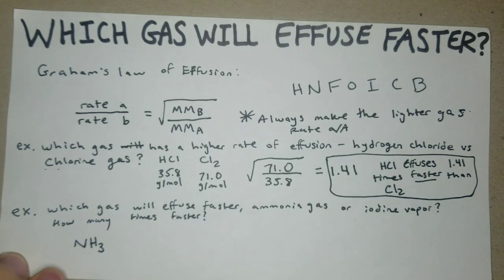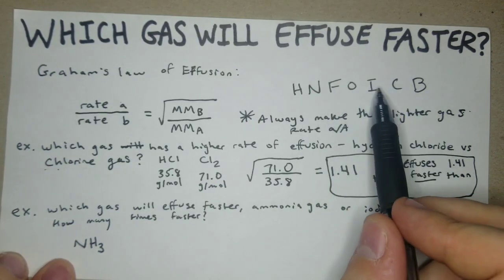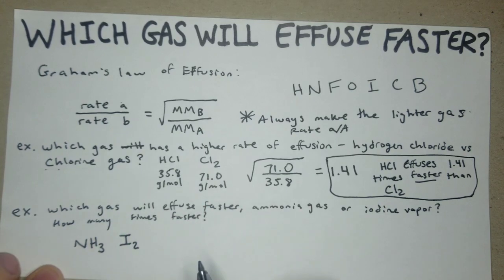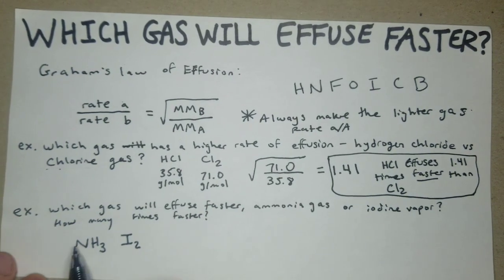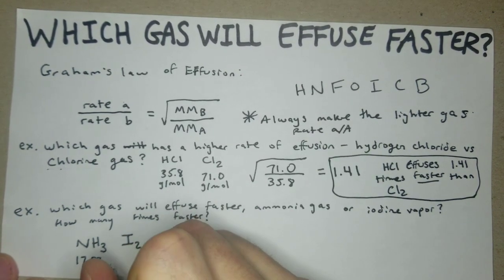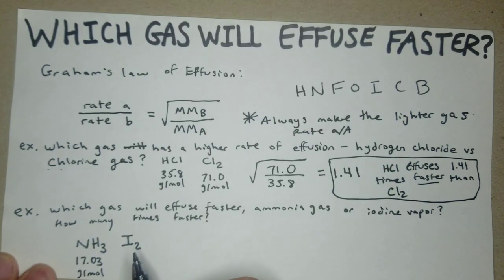And then we have iodine, it says iodine vapor, but we know from our diatomic have no fear ice cold beer, iodine is going to be I2. So now we'll just run to the periodic table, check those out. NH3 should be 17.03 grams per mole, and then iodine should be 253.81 grams per mole.